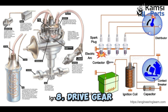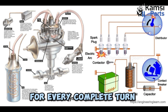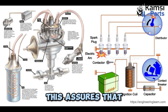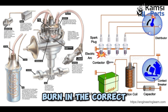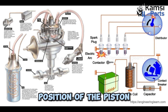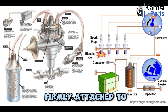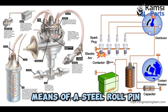8. Drive gear. The ratio of the distributor gear is such that it gives the distributor one full turn for every complete turn of the crankshaft and for every two complete turns of the camshaft. This assures that the spark plugs will fire in the correct position of the piston. The drive gear is firmly attached to the distributor shaft by means of a steel roll pin.